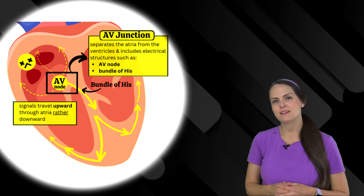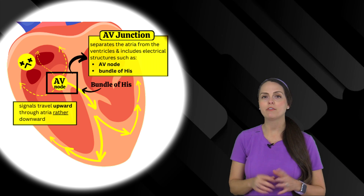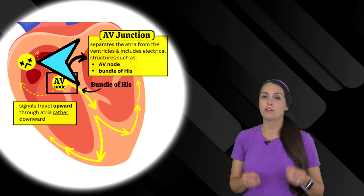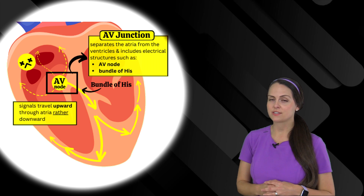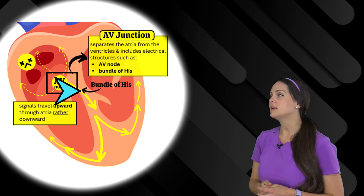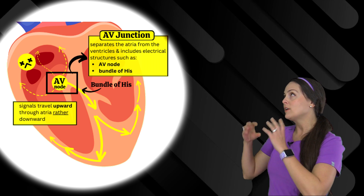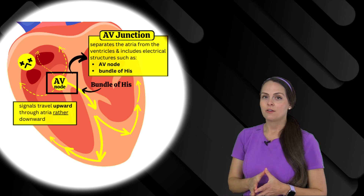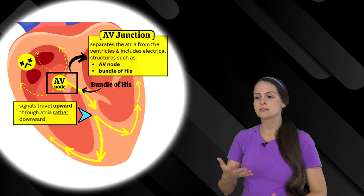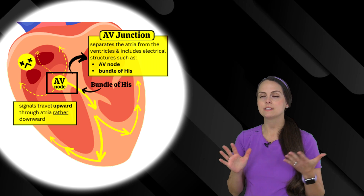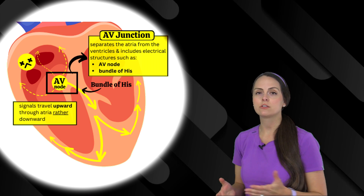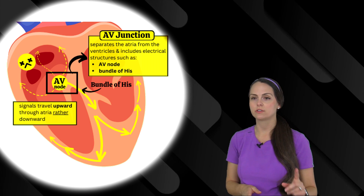So what is happening in junctional escape rhythm? Our SA node isn't working well or at all, so structures in the AV junction — like the AV node or bundle of His — take over. Electrical signals leave the AV node and travel normally down through the ventricles, causing a normal ventricular rate. This leads to a normal QRS complex, QT interval, and T wave — all of that will look fine.